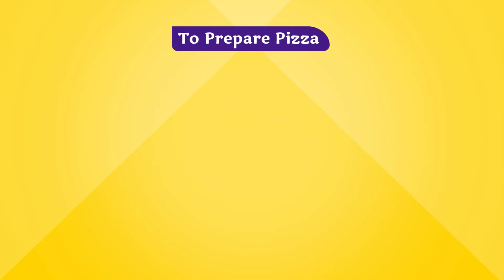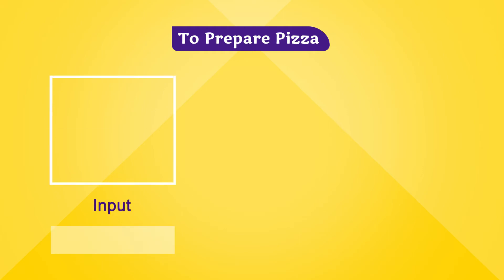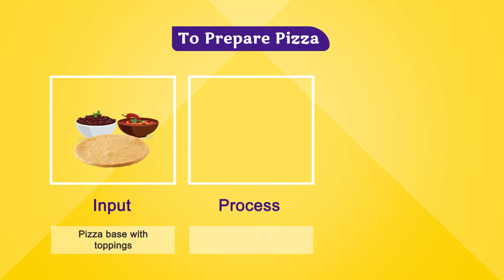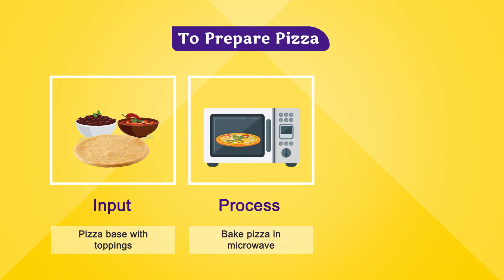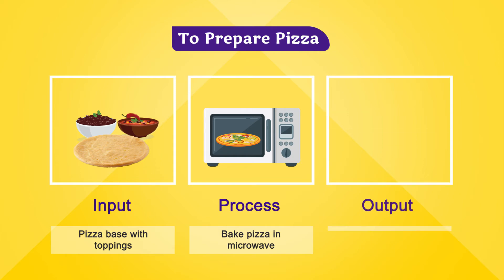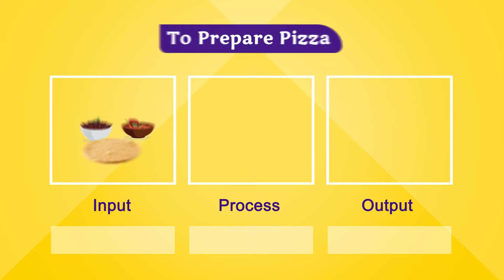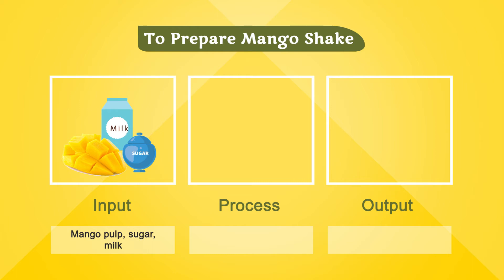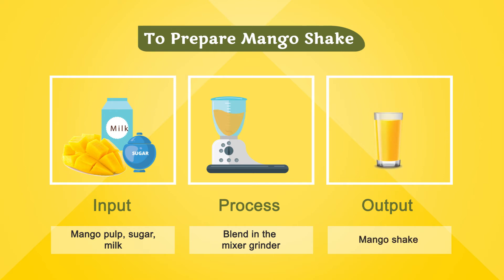In our daily life, many activities involve the Input-Process-Output cycle. For making a pizza — Input: pizza base with toppings; Process: baking the pizza in the microwave; Output: hot, yummy pizza. For making a mango shake — Input: mango pulp, sugar, and milk; Process: blending in a mixer grinder; Output: yummy mango shake.